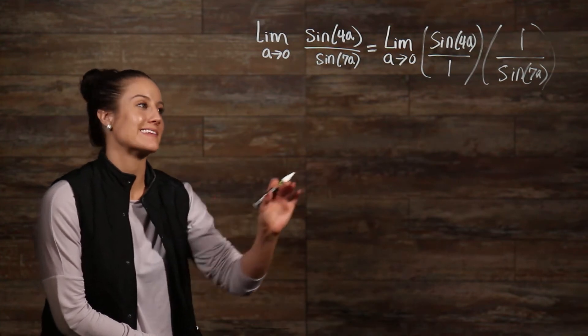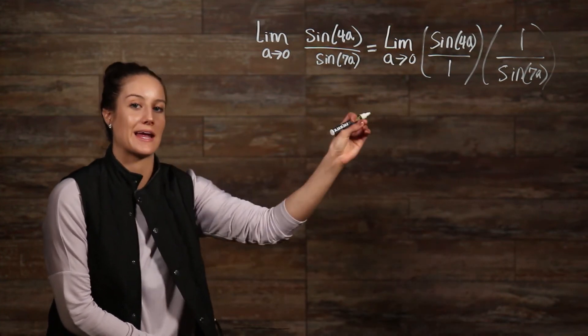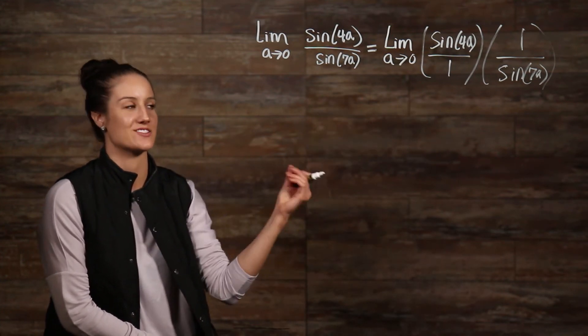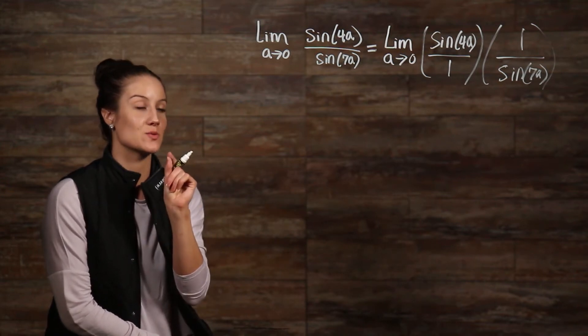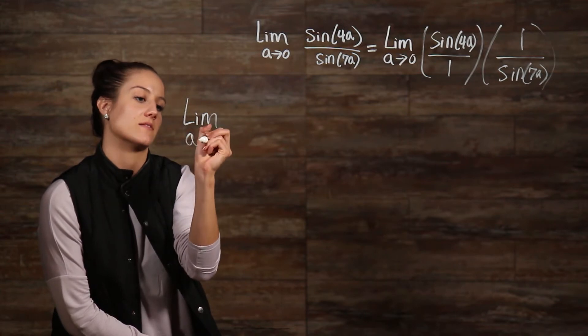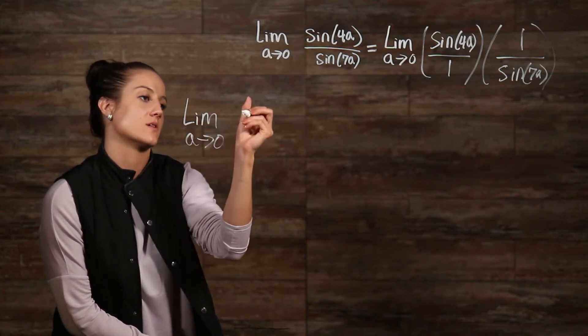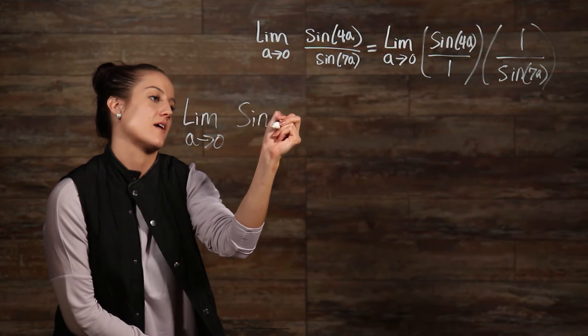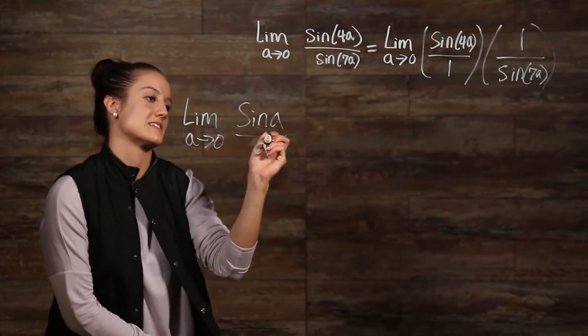Well, we can multiply this whole thing by a over a, since a over a is really just 1 and it doesn't change anything. Now, the reason I'm doing that is, if you remember, one of our facts is the limit as a goes to 0 of sin(a) over a is equal to 1.